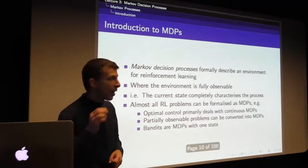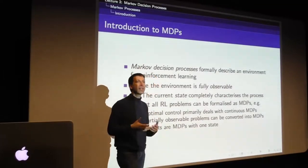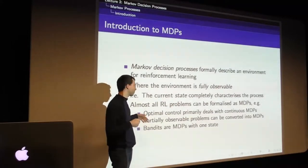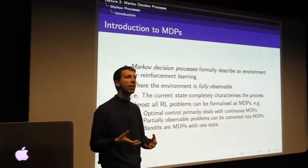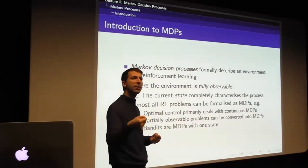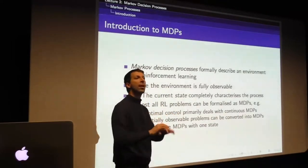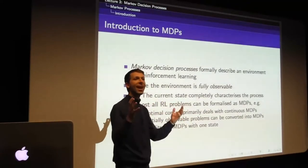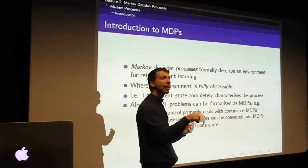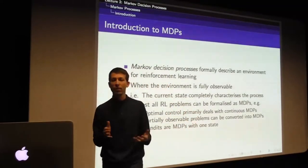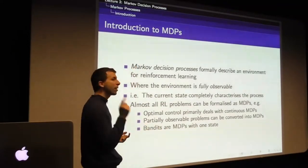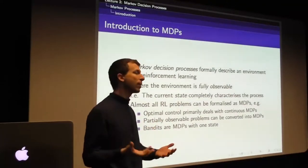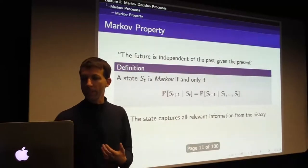Partially observable problems can also be completely converted into an MDP. They really are MDPs - if you understand the basics, you can solve all of these problems in principle. Some of the simplest cases are bandits: you get a set of actions, take an action, get some reward, and that's the end. This is just a Markov decision process with only one state. If we can solve MDPs, we can solve all of these cases.